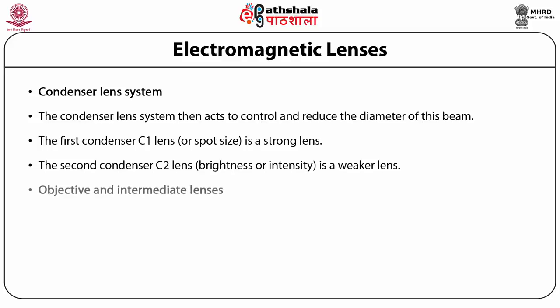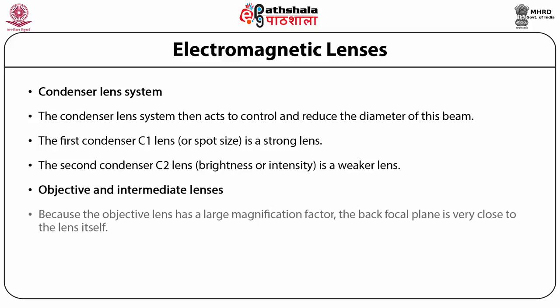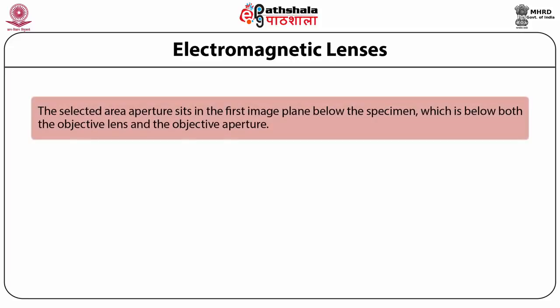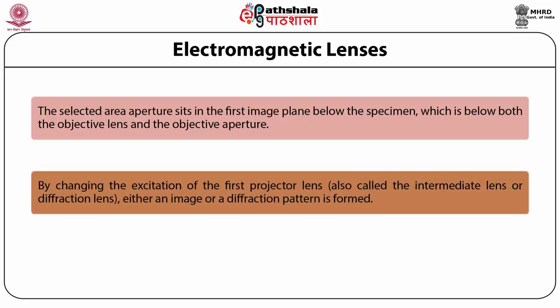The objective lens has a large magnification factor, which is why the back focal plane is very close to the lens itself. The objective aperture — the middle aperture on the column — is mounted in the back focal plane. Inside the first image plane beneath the sample, a selected area aperture is placed underneath both the objective lens and the objective aperture. By altering the first projector lens excitation, also known as the intermediate or diffraction lens, either an image or a diffraction pattern is produced.